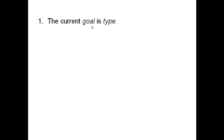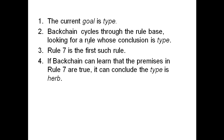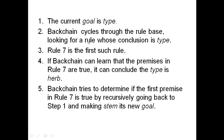We're at step one again and the current goal is 'type.' Backchain cycles through the rule base looking for a rule whose conclusion is type. Rule seven is the first such rule — it concludes that type is herb. If backchain can learn that the premises in rule seven are true, it can conclude the type is herb.